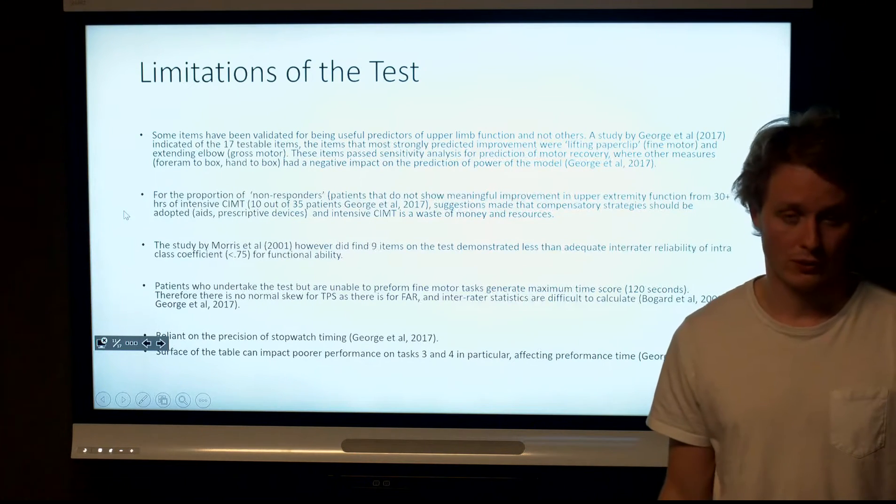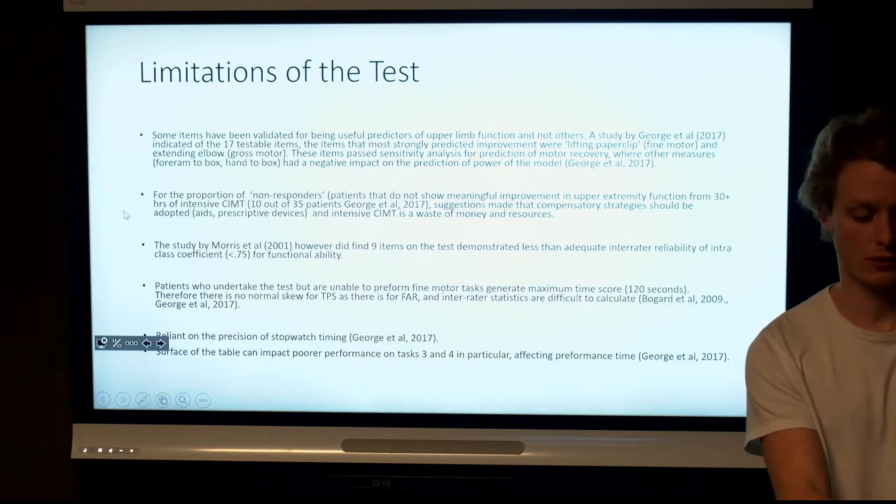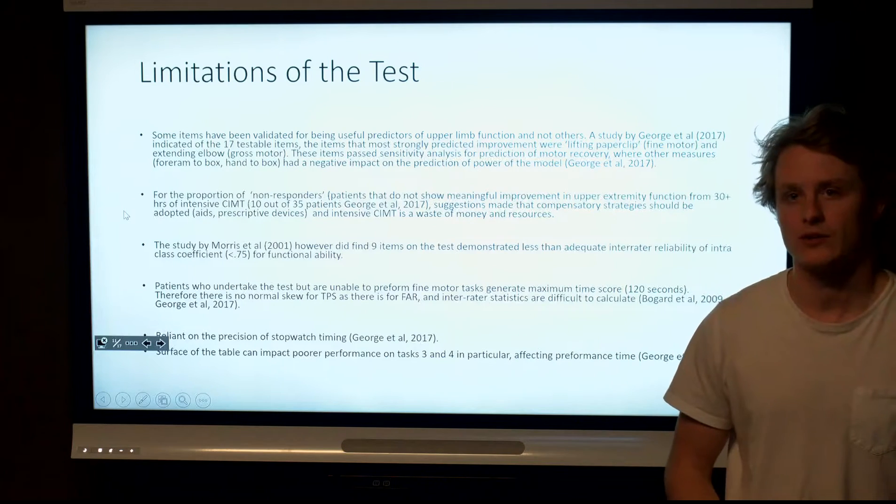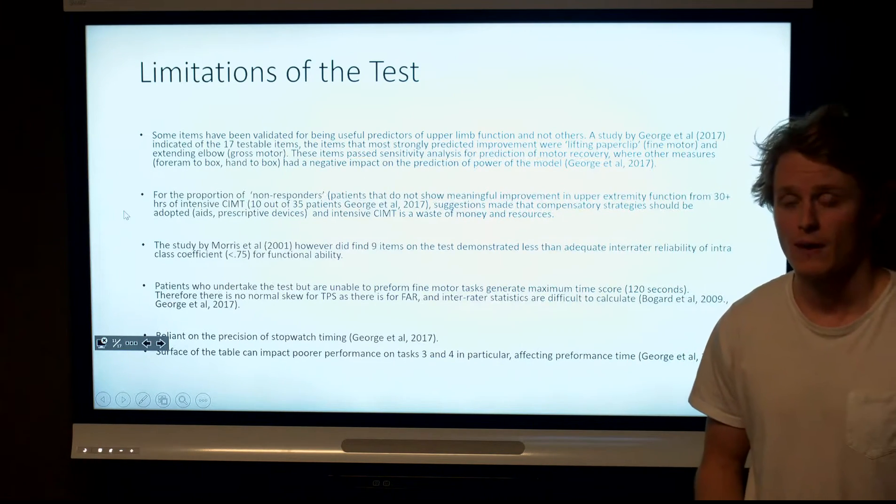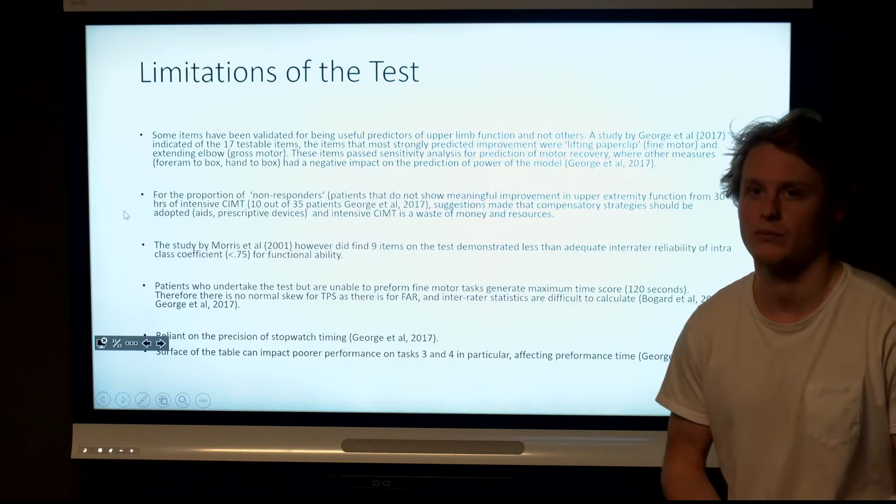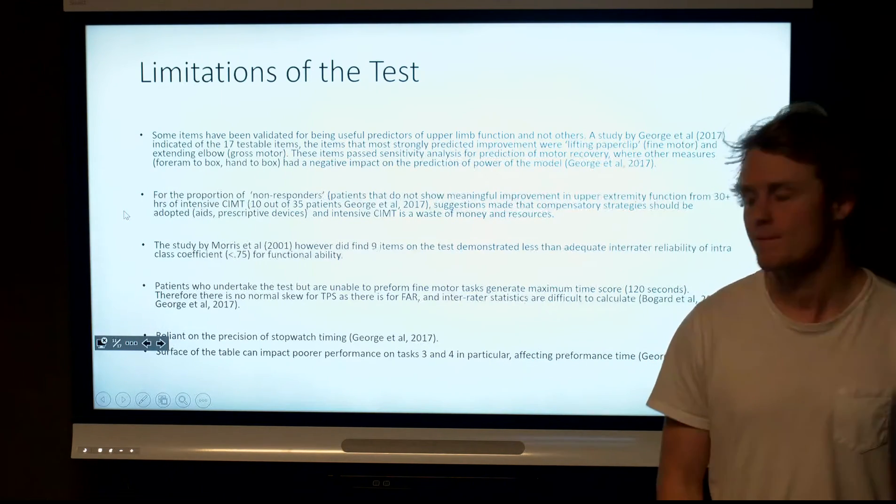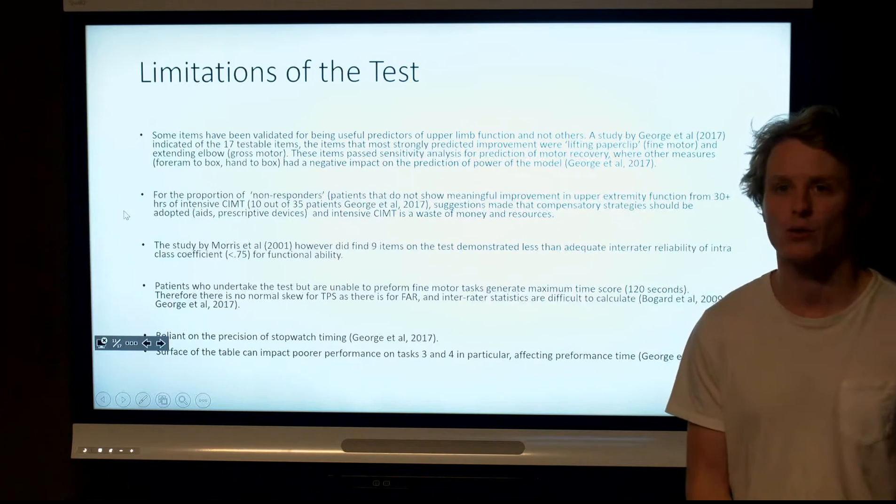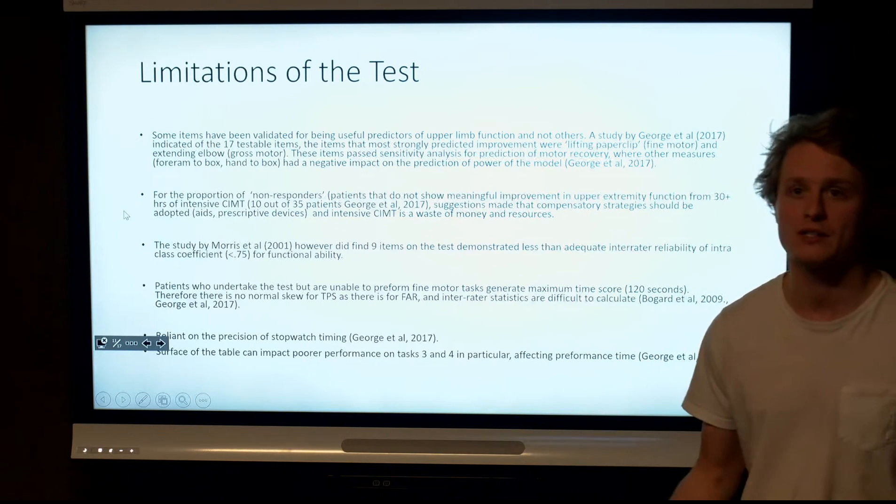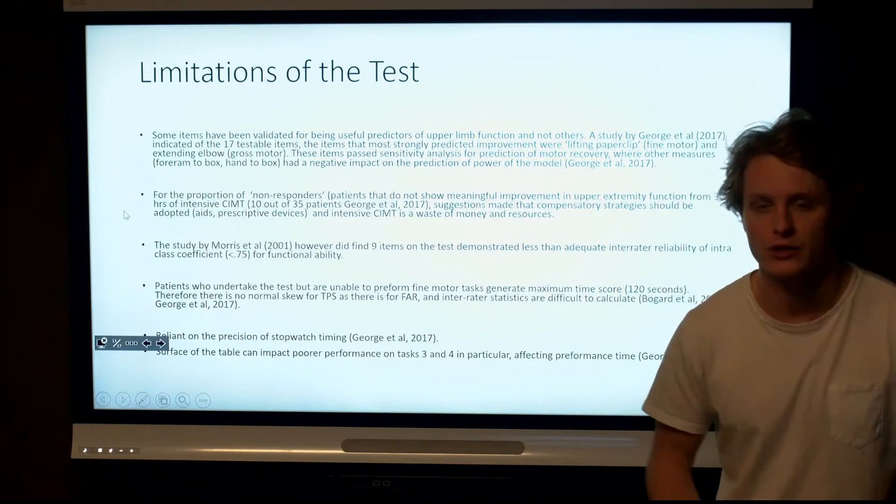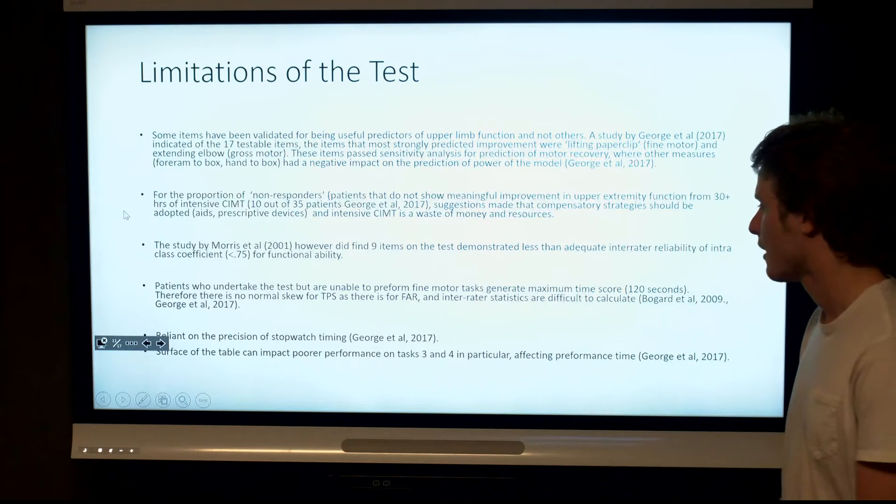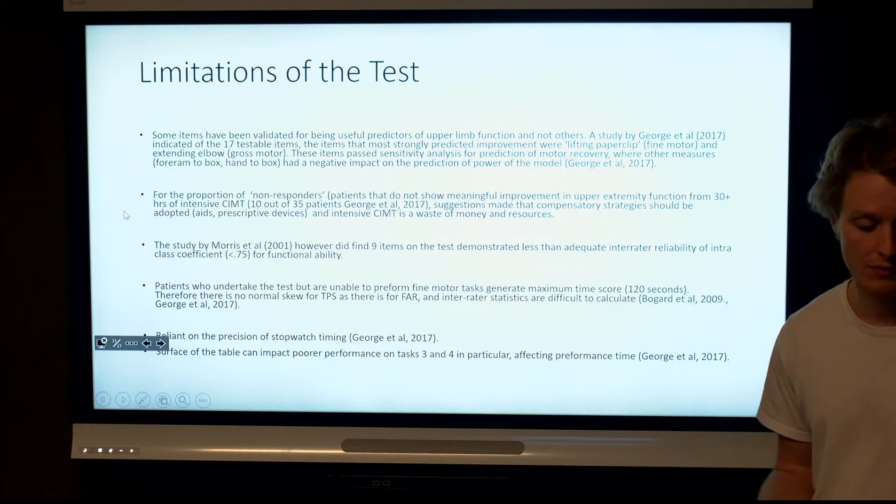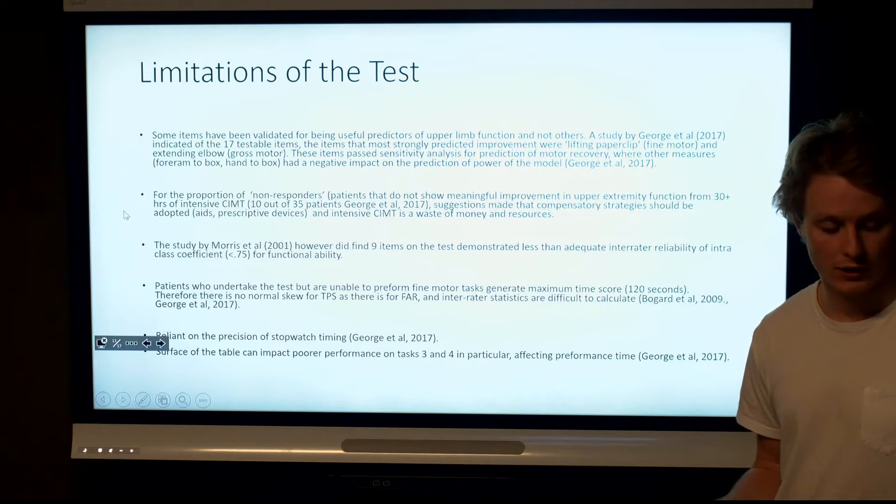Furthermore, there was a proportion of non-responders in the study, a group of people that did not respond to constraint-induced movement therapy, and it's been suggested for these individuals that compensatory strategies, mobility aids, and assistive devices is better, because a certain proportion of individuals don't show improvement with the Wolf Motor Function Test, but this is not a majority. Morris also found that nine items of the individual 17 didn't have adequate inter-rater reliability for functional ability, but the ones that produced the best scores were those that were testing fine motor function, which would be picking up the pencil and paper clip and those sorts of things. It's also quite reliant on the precision of stopwatch timing, but some other studies have managed to get around this by having electronic filming.